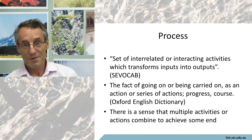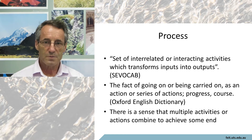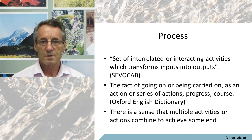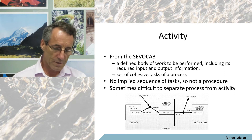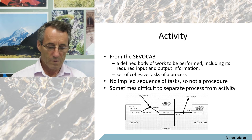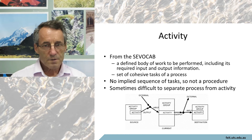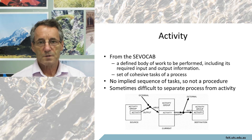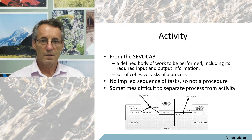Let's break it down, because we have a process, but within that, in order to be useful, we have to talk about what makes up a process. The first thing that makes it up is activities — a process is made up of multiple activities. An activity, again from the SE vocab, is a defined body of work to be performed, including its required input and output information. It's a set of cohesive tasks of a process. An activity is not a procedure; it's not a series of steps and things to be done. It's simply a cohesive set of tasks.